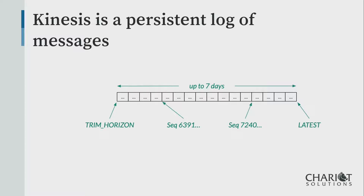Each message is also timestamped. You can go into Kinesis and say, start reading messages at this timestamp and move forward. So you can, for example, write something that says grab the last five minutes worth of messages — because I know the current time, I can figure out the timestamp — and process those five minutes worth of messages.